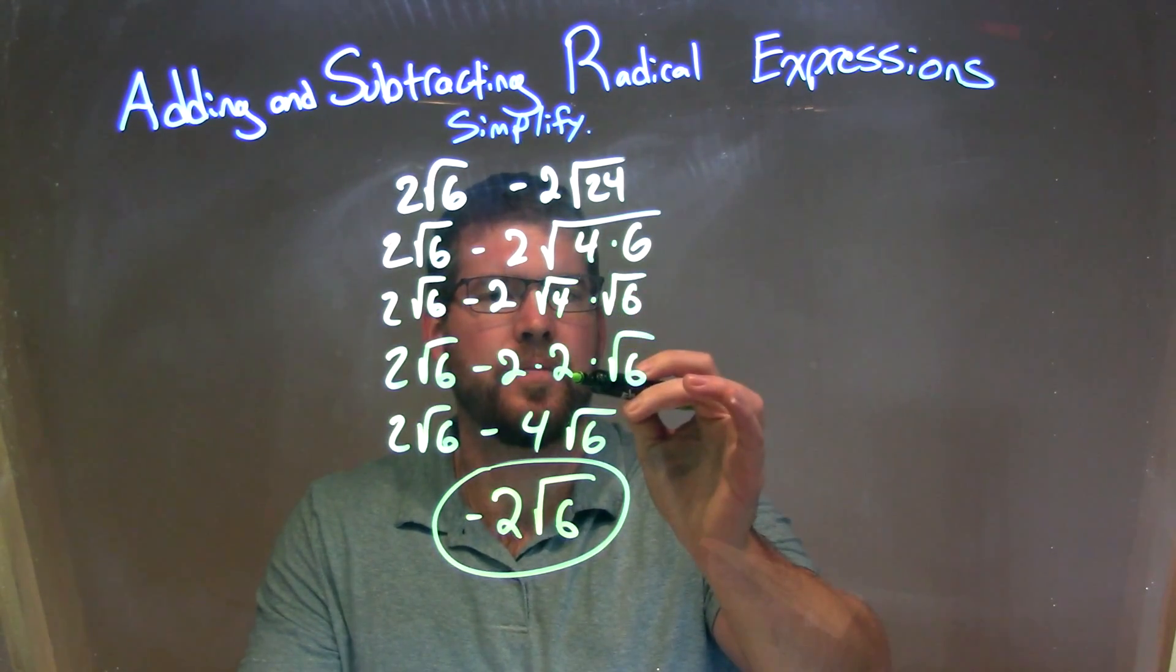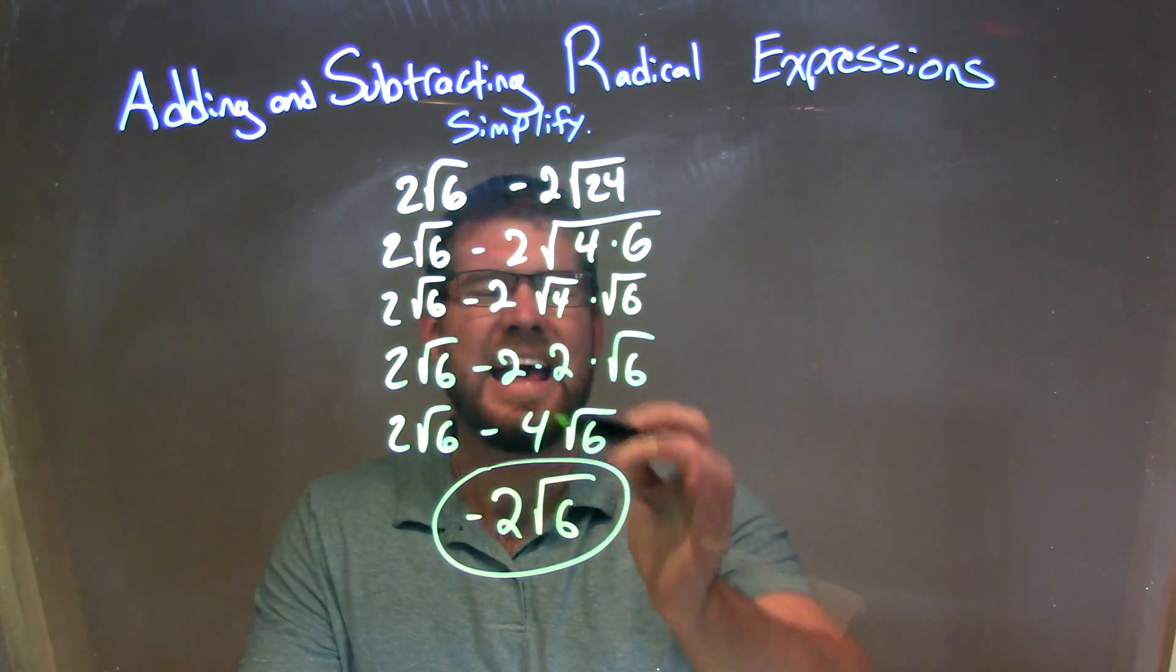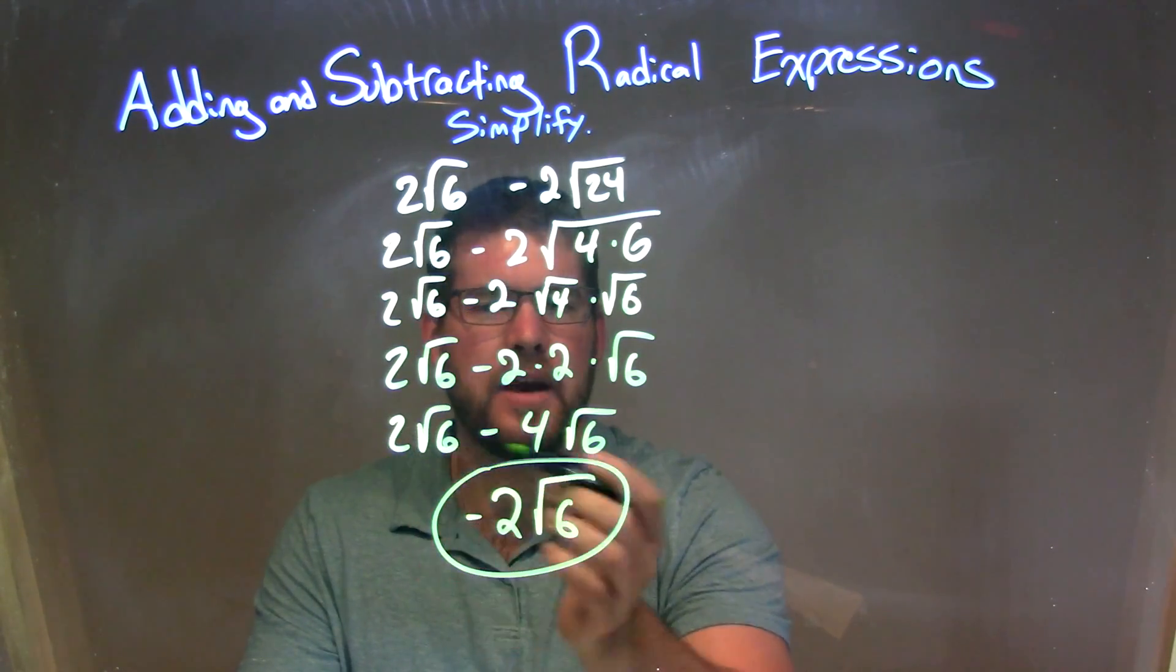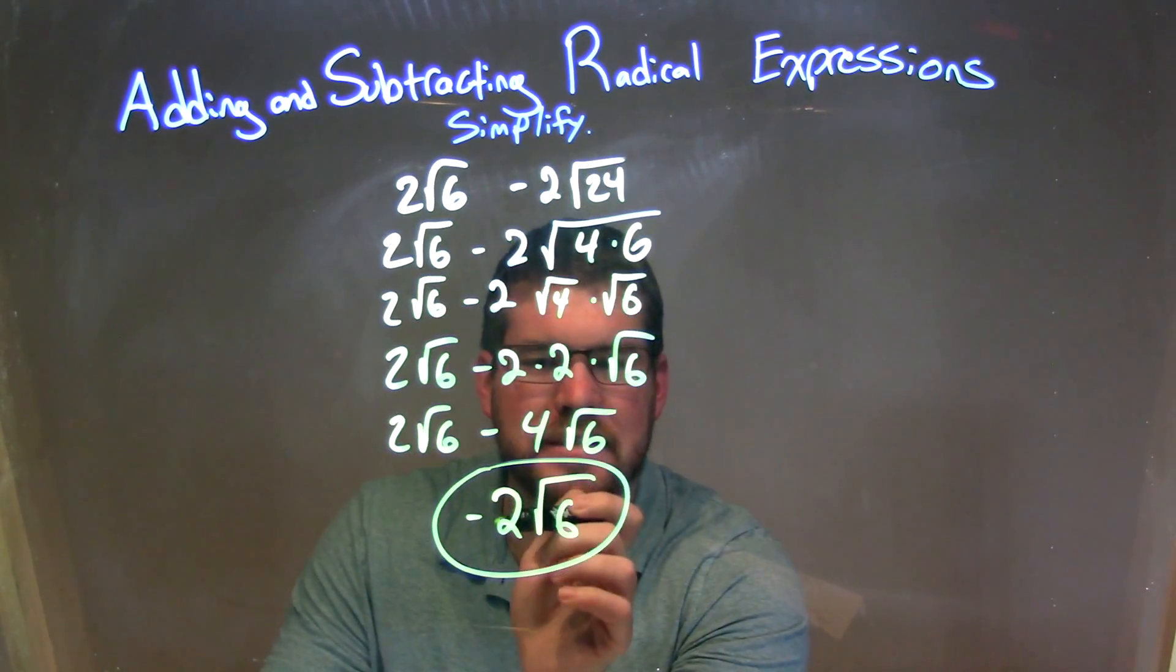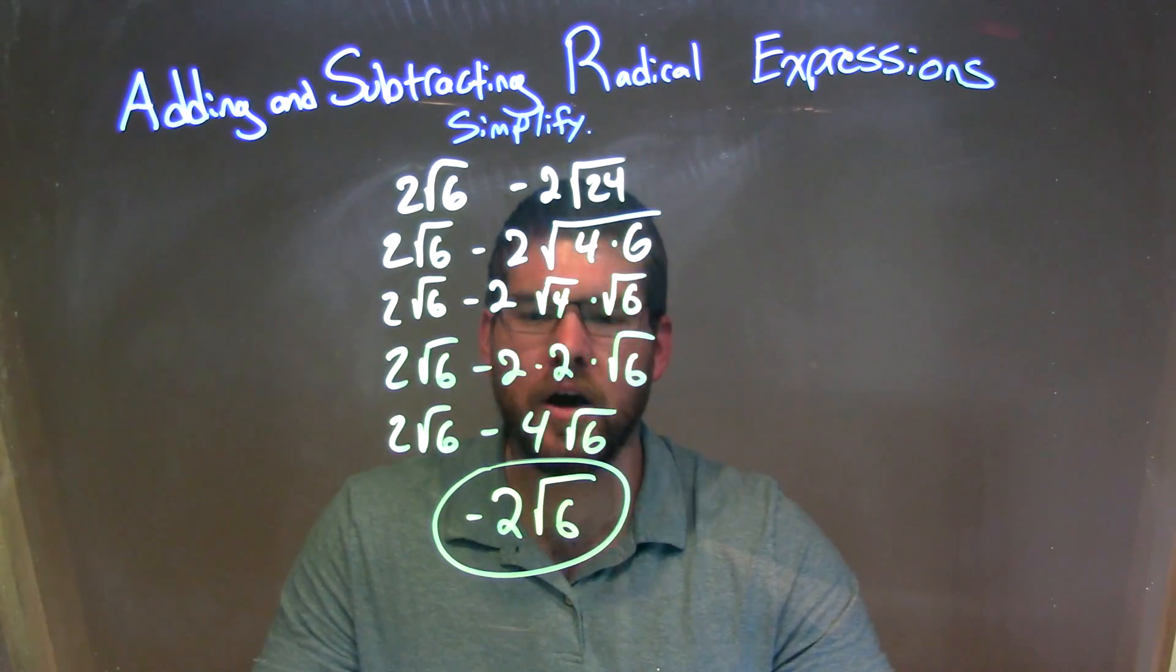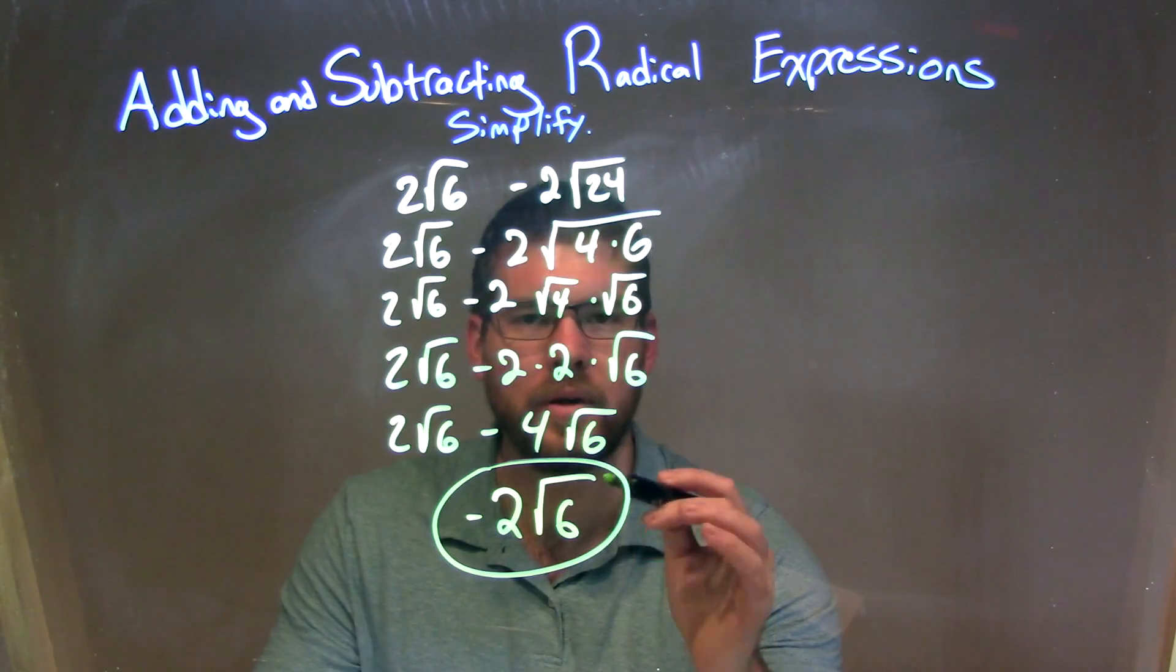So we find the square root of 4 to be 2, then multiply 2 times 2 is 4. At this point, they both had the square root of 6 and just had a number out in front. Combine the numbers out in front, which was 2 minus 4, which is negative 2. Brought the square root of 6 to give me my final answer of negative 2 times the square root of 6.